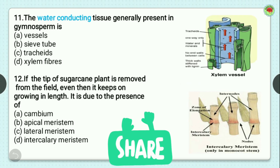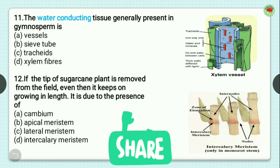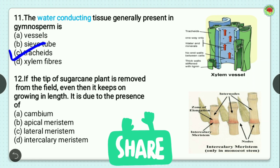Question number 11: the water conducting tissue generally present in gymnosperms is? Gymnosperms are plants which produce naked seeds. Options are vessels, sieve tubes, tracheids, and xylem fiber. Tracheids are present in xylem and transport water and nutrients to different parts of the plant. So the correct option is tracheids, option C.